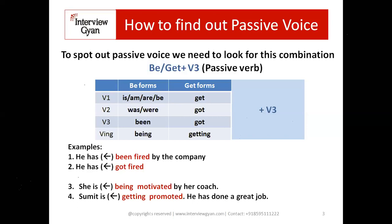Now contrast with: 'He has done a great job' — 'usne bahut accha kaam kiya hai.' In this second sentence, you can see there is no be-form and no get-form. 'He has done' — after 'has' there is 'done,' which is a third form, but there is no be or get form before it. So this sentence is active voice — he did the action himself. The combination we need to fix is: be-form or get-form plus third form equals passive. If you see this combination anywhere, you can spot a passive voice sentence.